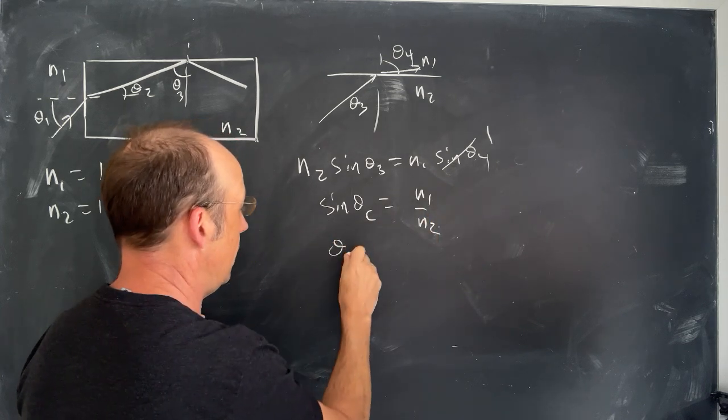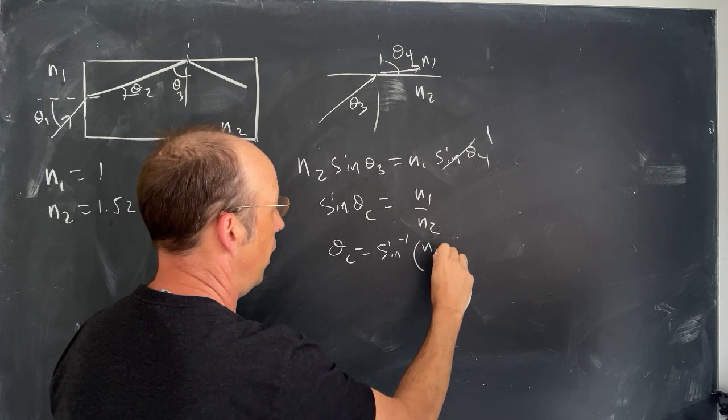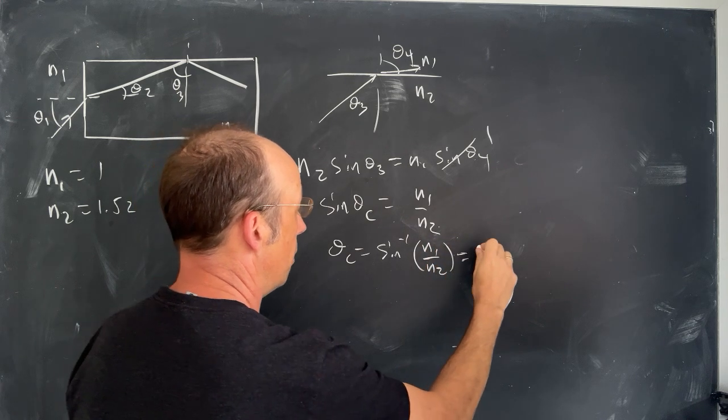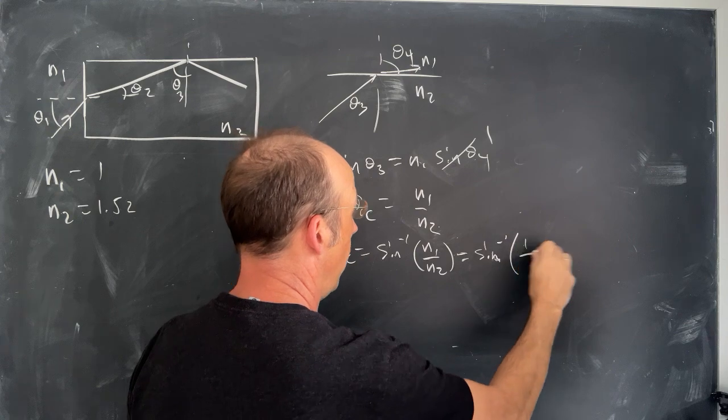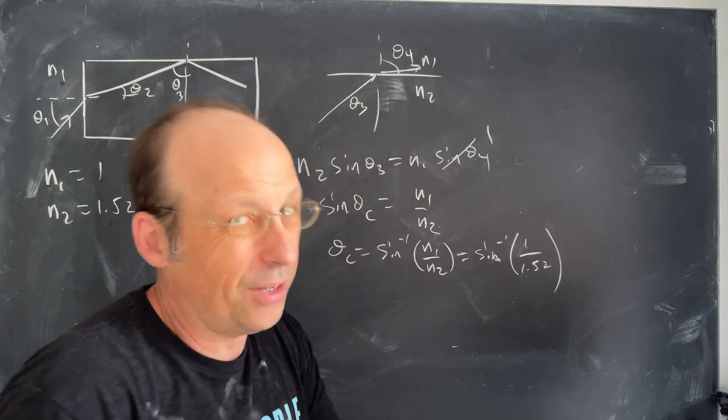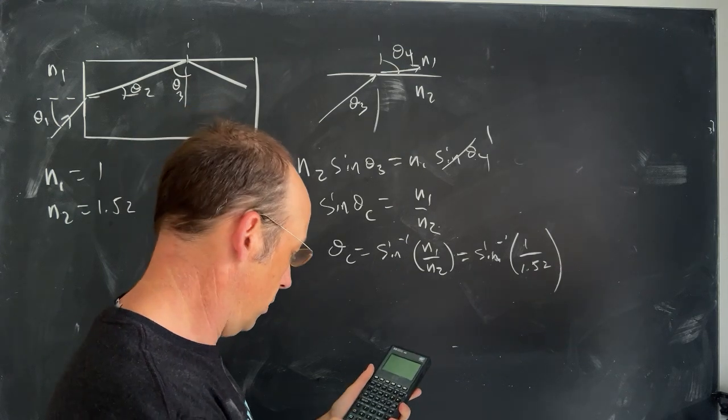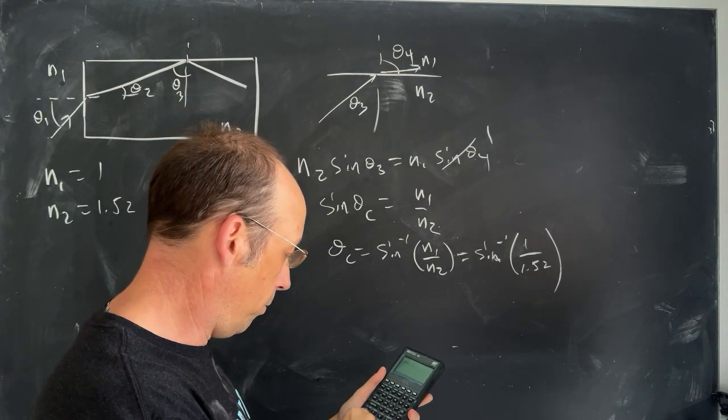So theta C is going to be the inverse of N1 over N2, which is going to be the inverse, sine inverse of 1 over 1.52. Let's just get that angle. I don't think we need it, but let's just get that angle. So I'm going to put it in my calculator here, 1, 1.52, divided by inverse, sine,